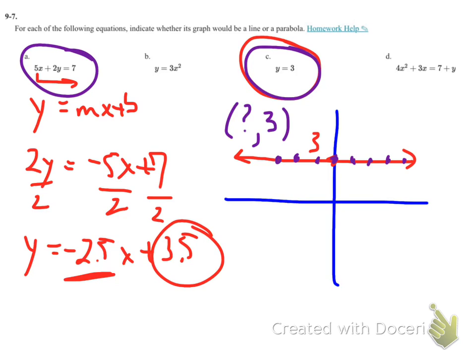So a and c are both linear, parabolas are going to be b and d.